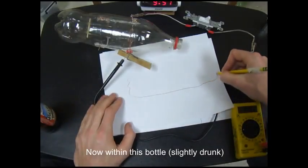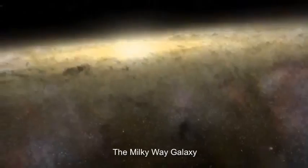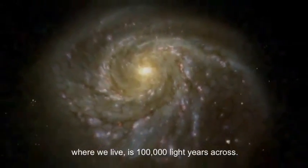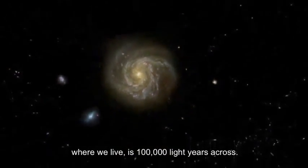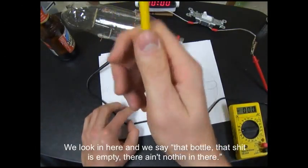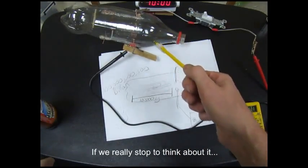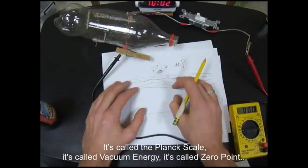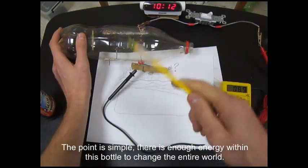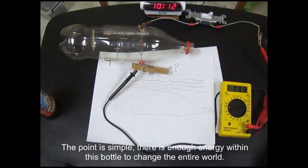Now within this bottle is a spiral arm galaxy. The Milky Way galaxy, where we live, is a hundred thousand light years across from end to end. We look in here and we say that bottle, there ain't nothing in there. If we really stop to think about it, it's called the Planck scale, it's called vacuum energy, it's called zero point. The point is simple, is that there's enough energy within this bottle to change the entire world.